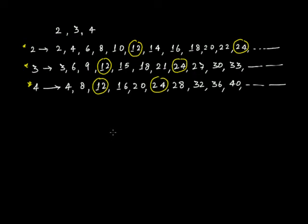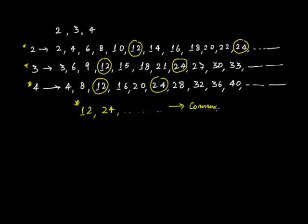Similarly, you can find more and more common multiples. So far, 12 and 24 are the common multiples of 2, 3, and 4. You can find as many as you want by continuing to write out the multiples. These are the common multiples — the multiples that are present in each and every one of the given numbers.